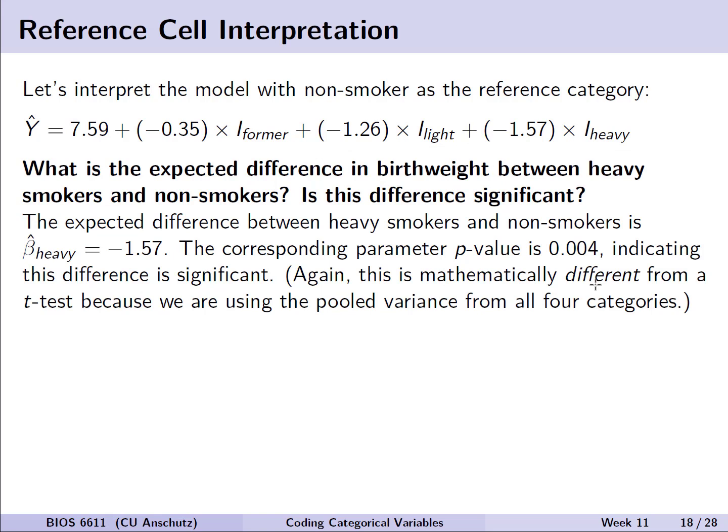We might also ask what is the expected difference between a heavy smoker and a non-smoker, and is that difference significant? Looking at the model with non-smokers as the reference category, heavy smokers have a lower birth weight and the p-value is less than 0.05, indicating a significant difference. This would differ from a two-sample t-test p-value because of how variance is calculated — the regression uses pooled variance from all four groups.